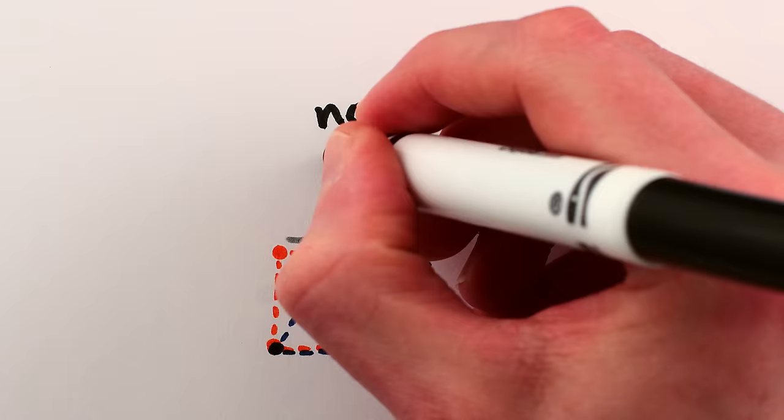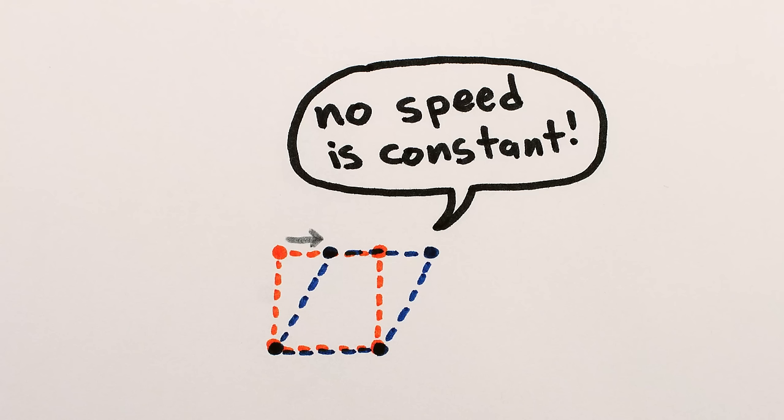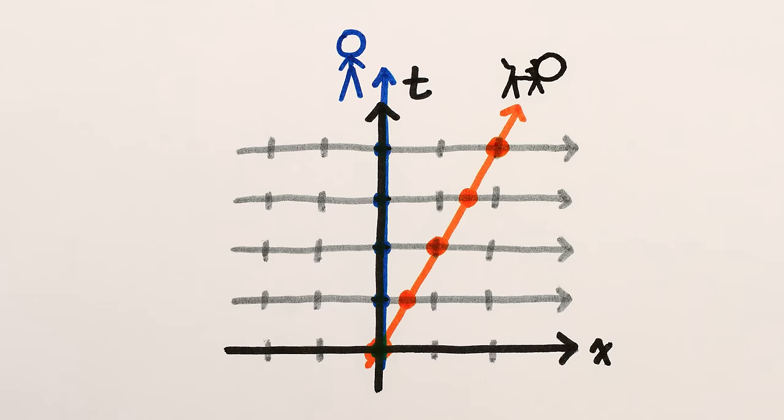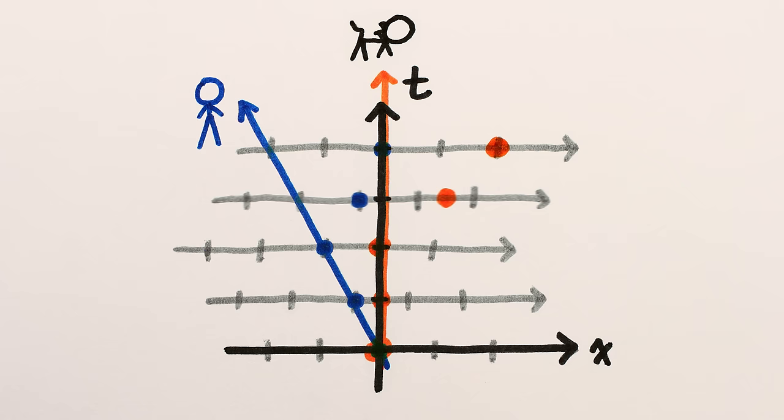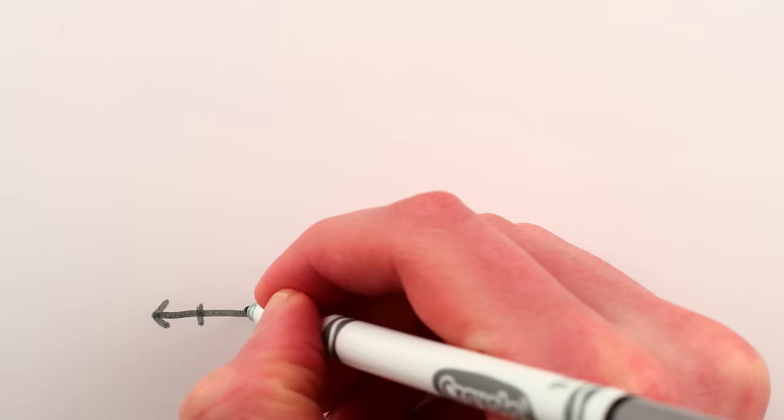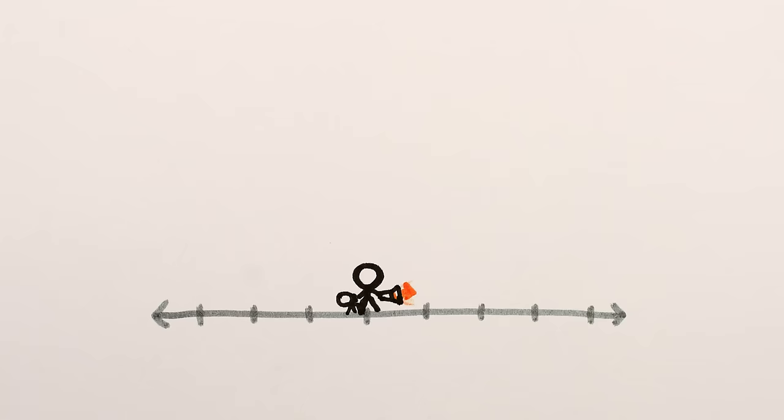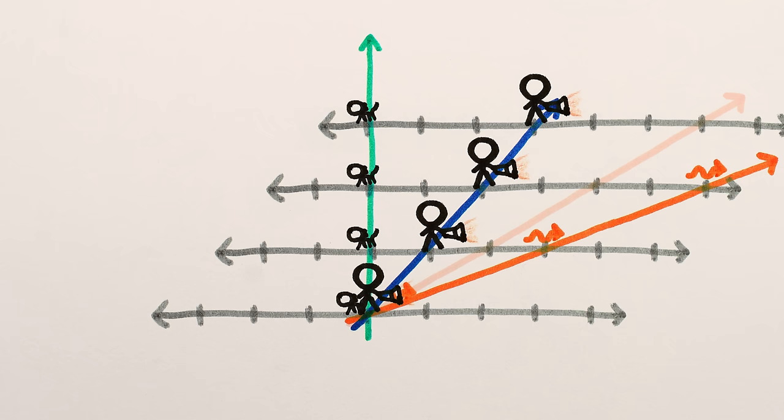Shear transformations simply can't accommodate this feature of light's behavior. They change all velocities equally by sliding each snapshot an amount proportional to its time. No velocity remains unchanged. If you draw the worldline of a light ray and then change to a moving perspective using a shear transformation, the speed of that light ray will change, which is wrong.